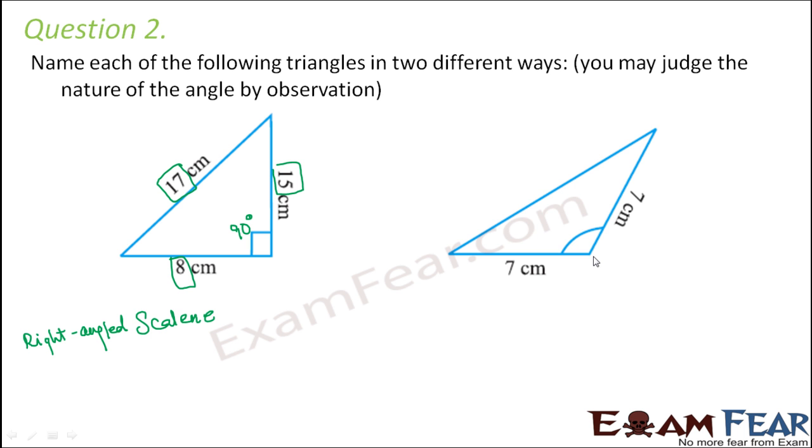Let's look at the second one. Here we see that the length of these two sides are equal. Both are 7 centimeters. So that means it is an isosceles triangle. And we also see that the measure of this angle is greater than 90 degrees because 90 degrees would have been somewhat like this. So it is more than 90 degrees. That is, this is obtuse angle. So this is obtuse angled isosceles triangle.